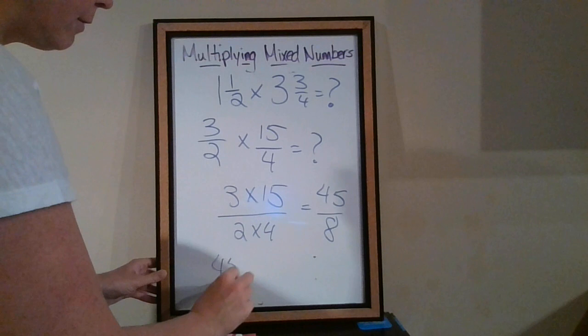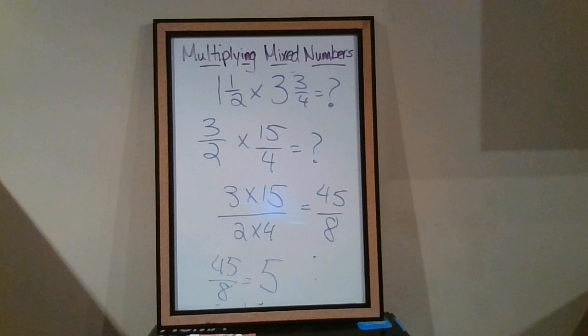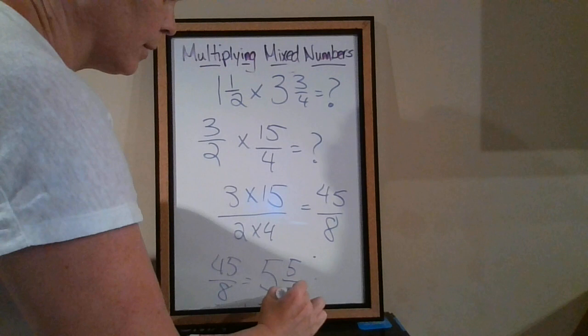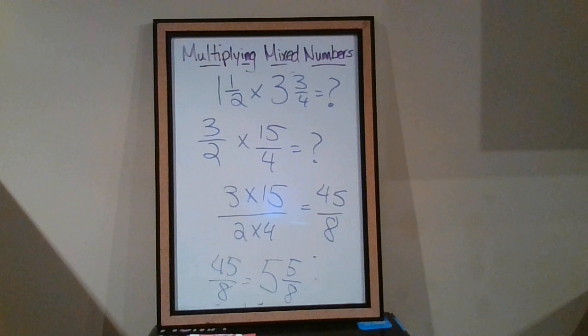So 45 over 8, 8 goes in 5 times, and that would be 40. The difference between 40 and 45 is 5. That becomes my numerator. The denominator stays the same. So our final answer is 5 and 5 eighths.